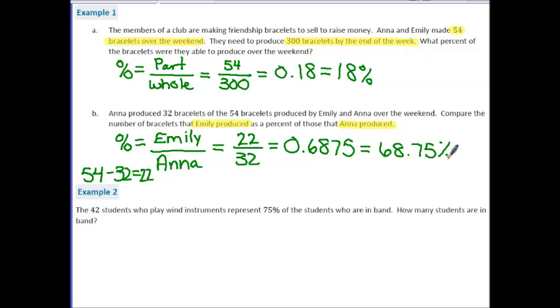Example two says the 42 students who played wind instruments represent 75% of the students who are in band. How many students are in band? So in this case, we probably want to use our formula percent times whole equals part. So we need to identify what those elements are. They tell us that 42 students play wind instruments. So that's going to represent a part of our whole, and this represents 75% of the students who are in band. So some of the elements here, the 42 is going to represent the part. 75% is our percentage.